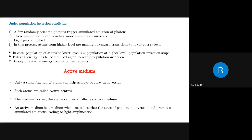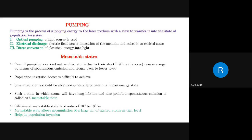Another process is pumping. Pumping is required so that you get population inversion. Initially you have lots of atoms in the lower energy level, but you need more atoms in the high energy level. For that, you need to give some external source of energy so these atoms go to the high energy level and stimulated emission takes place. There are three ways to provide this energy: optical pumping using a light source, electrical discharge by creating an electric field in a gaseous medium, or converting electrical energy directly into light.